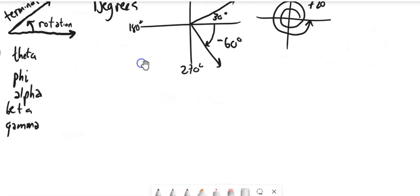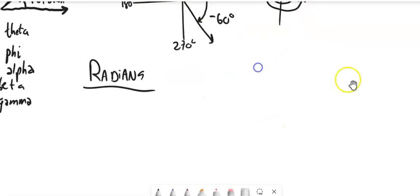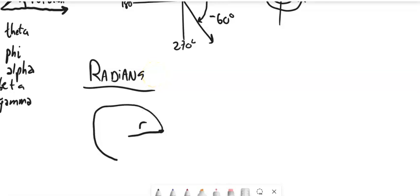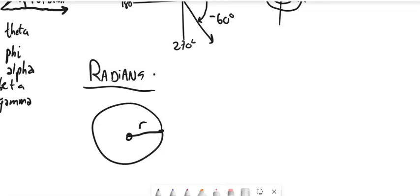So let's talk about radians. Radians are another way to express an angle. In degrees, a full circle or full rotation is 360 degrees. Radians are interesting — the word shares a root with radius, the radius of a circle. So we have a circle with radius R, and the circumference — the distance around the circle — is 2π times the radius, no matter how big the radius is.